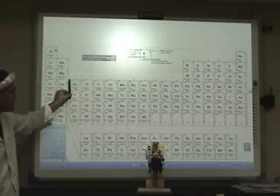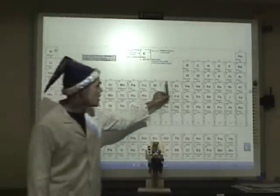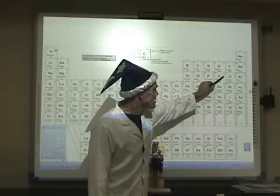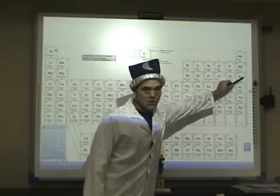Now we're going to skip the transition metals, that's groups three through twelve. And then we begin again with three, four, five, six, seven, eight valence electrons.